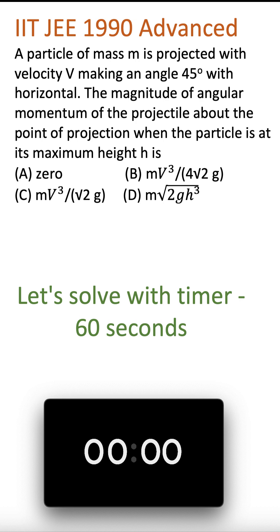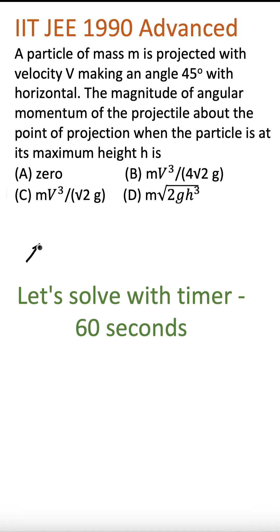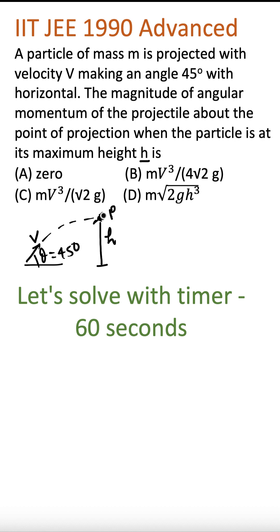There is a particle of mass m and it is being projected with velocity v at angle theta = 45 degrees, and it reaches maximum height h. The question is: what is the angular momentum of this projectile about the point of projection? Let's say this is the point of projection O. That's what we need to compute — the angular momentum of P about O.